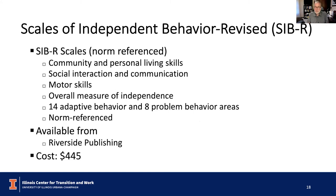Similarly, the Scales of Independent Behavior, Revised, or SIBR, is much like the Vineland but simpler with fewer items. Scales include community and personal living, social interaction, motor skills, and an overall measure of independence. It looks at 14 adaptive behavior and eight problem behavior areas and is norm-referenced, costing about $450 from Riverside Publishing. Like the Vineland, it's typically used in the diagnostic process to determine eligibility for special ed, but if it's already done, pull the information you can to look at strengths and needs for students.